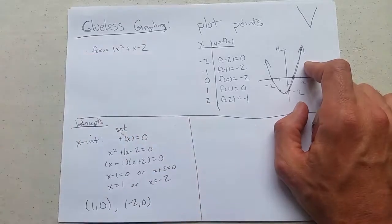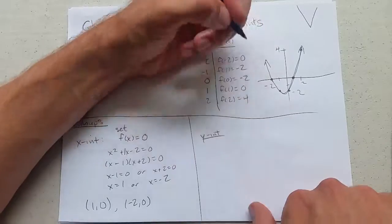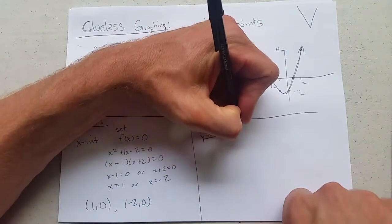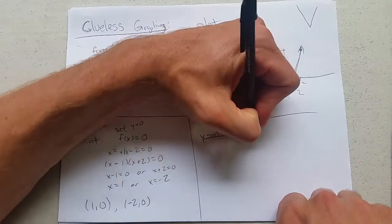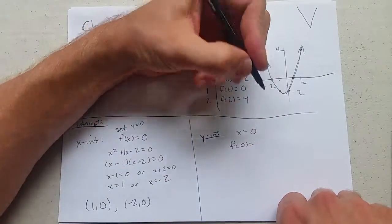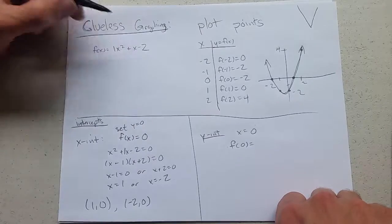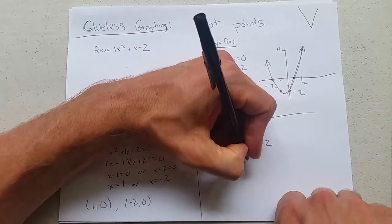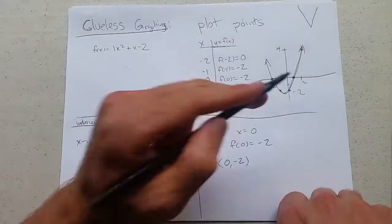Y intercepts very similar, except you're going to set the other coordinate, the x coordinate, equal to 0. So here we set y equal to 0, here we're going to set x equal to 0. So what is f of 0? We plug in 0, we do that very quickly: 0 plus 0 minus 2, we get negative 2, and this is our y value. So our y intercept is (0, negative 2). Matches our graph.